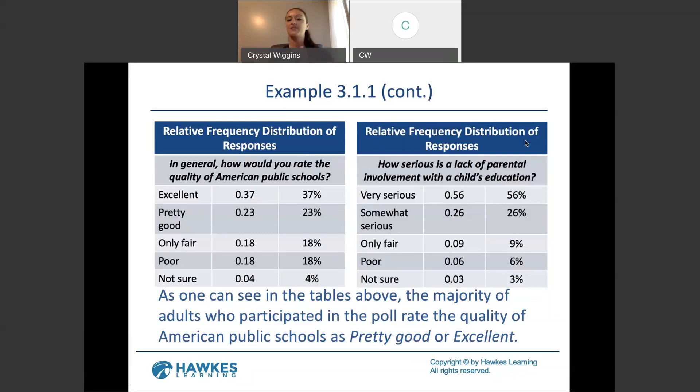Normally, we don't say, oh, 0.56 of the people believe it is very serious to have lack of parental involvement. That's not normally how we talk. We talk 56% of those who were surveyed believe it's very serious. So think of the relative frequency as being the statistical value and the percentage being more like the English translation. And that kind of holds true when we start talking about probability. Our probabilities are going to exist between 0 and 1. Essentially, they're really relative frequencies just like these. So the probability of a person responding that it's very serious, there's a 56% chance that they'll respond that way. The probability is actually 0.56, but the percentage is our English translation. It's how we speak and translate things.